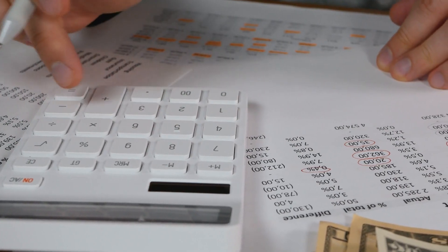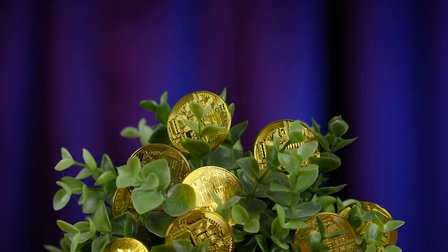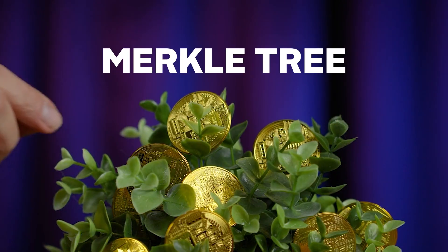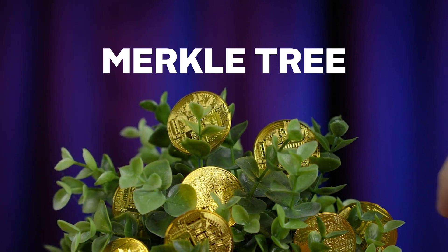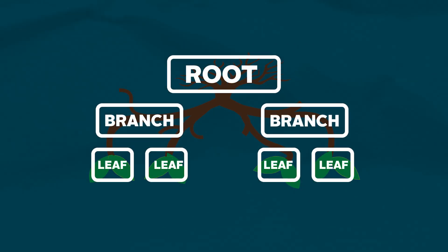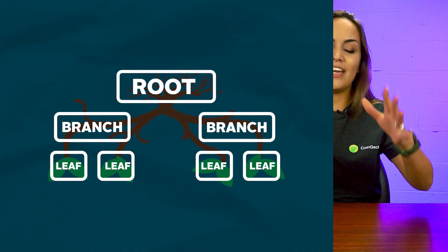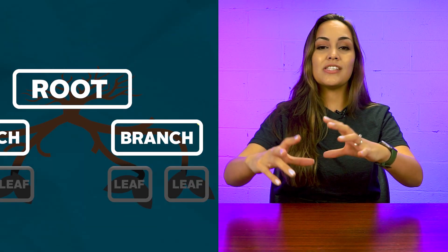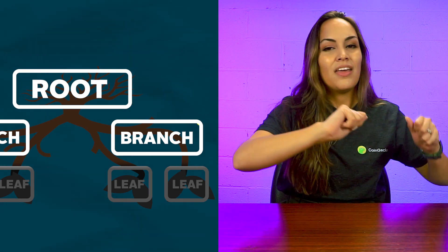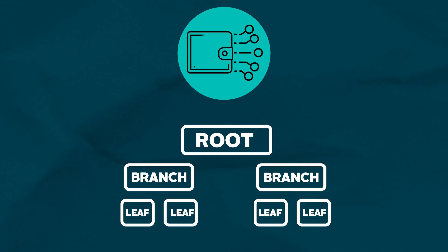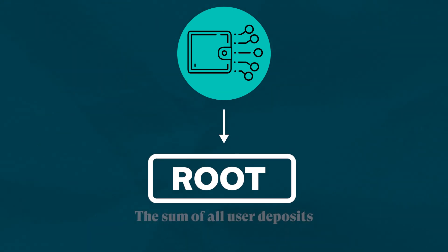To verify that an exchange is solvent via a proof of reserve audit, a Merkle tree is used to aggregate the total of all customer balances without exposing any private information. Merkle trees have a Merkle root, which is the single point of connection for the data branches and ensures that the right information is stored in each of them. Therefore, the information contained in each wallet address holding user assets can be aggregated to form one Merkle root, which represents the sum of all user deposits. They also provide a way for users to verify that specific assets tied to their own accounts are actually included in the audit.